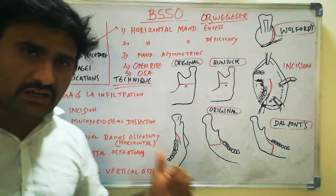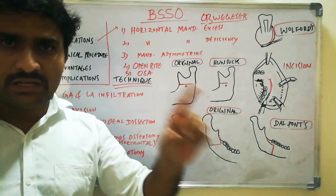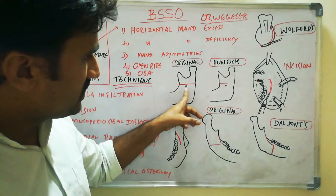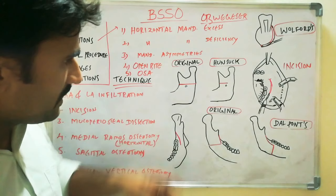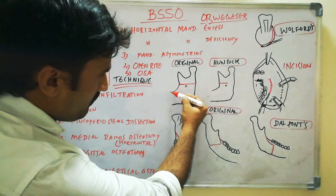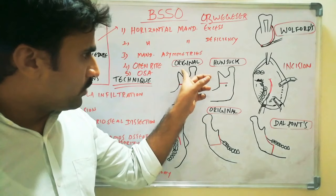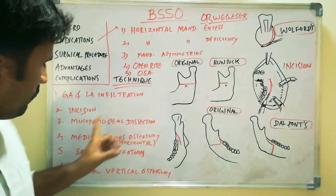Before going for medial ramus osteotomy, you should identify two important structures: the lingula and the sigmoid notch. The lingula is the bony prominence on the mandibular foramen, situated in a line extended posteriorly from the deepest part of the anterior border of the ramus. Your medial ramus osteotomy should be placed between the sigmoid notch and the lingula.